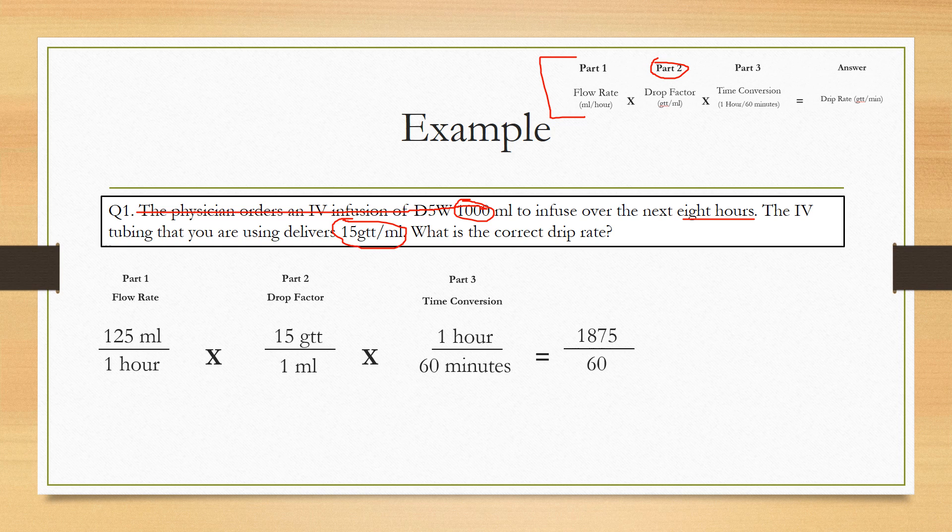This is basically like multiplying by one except what you're doing is changing all the units. This is just a standard way to change the units in order to get the correct drip rate. So what it's going to do is this.